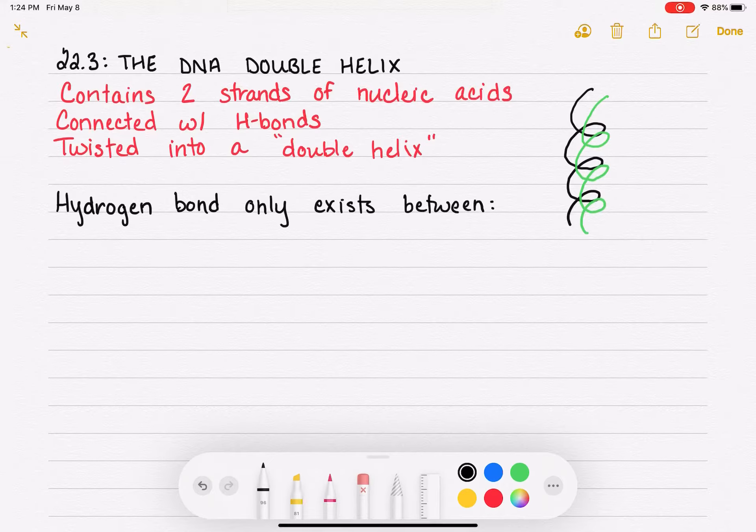One option for complementary base pairing is adenine hydrogen bonding with thymine. And the other option is guanine hydrogen bonding with cytosine.